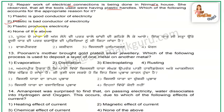Question number 13: Poonam's mother bought gold-plated silver jewelry. What process is this? One metal is deposited in a layer over another metal. This process is called electroplating.